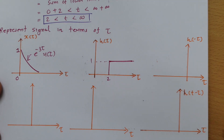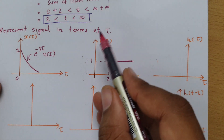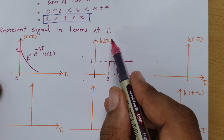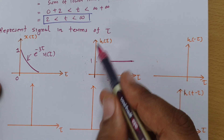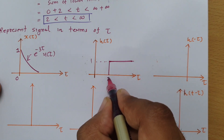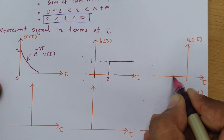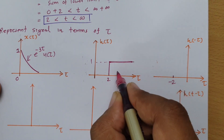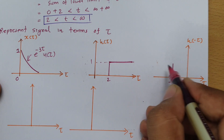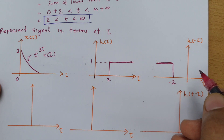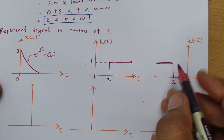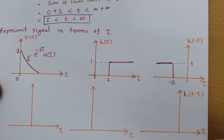Now we need to fold one signal and shift it. I see that h(τ) is easier to fold and shift, so I'll be folding h(τ) to get h(-τ). Since the signal was starting from 2, after folding it will start from minus 2. The signal was going towards positive infinity, so after folding it goes towards negative infinity. The magnitude remains 1.